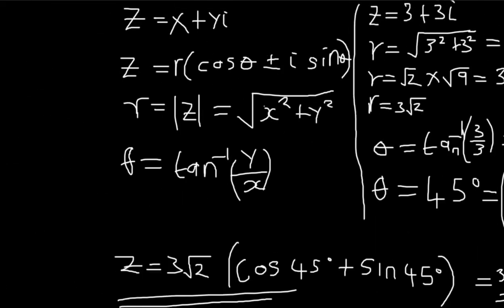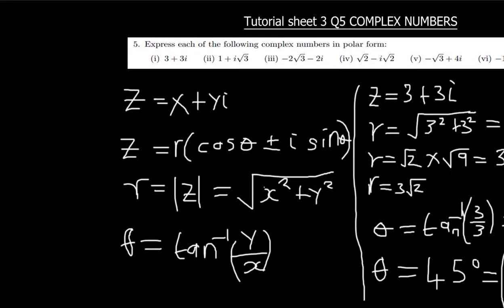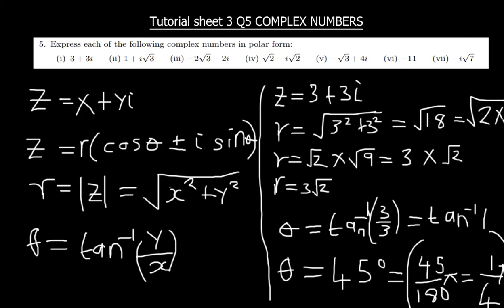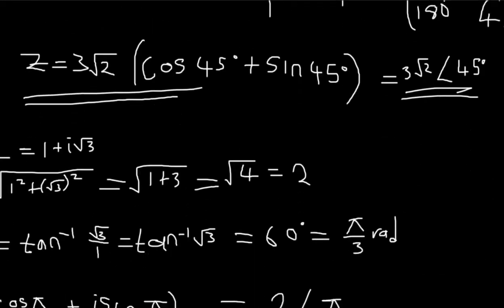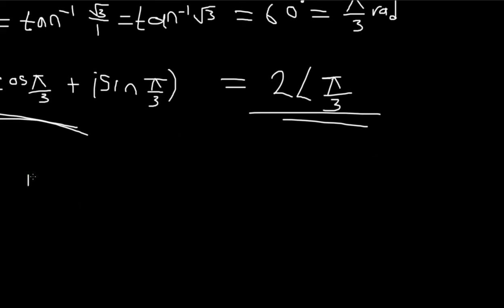We move on to question three. Question three is also straightforward, as are questions four and five. But let's do them all since they are simple. Question three is z = -2√3 - 2i.